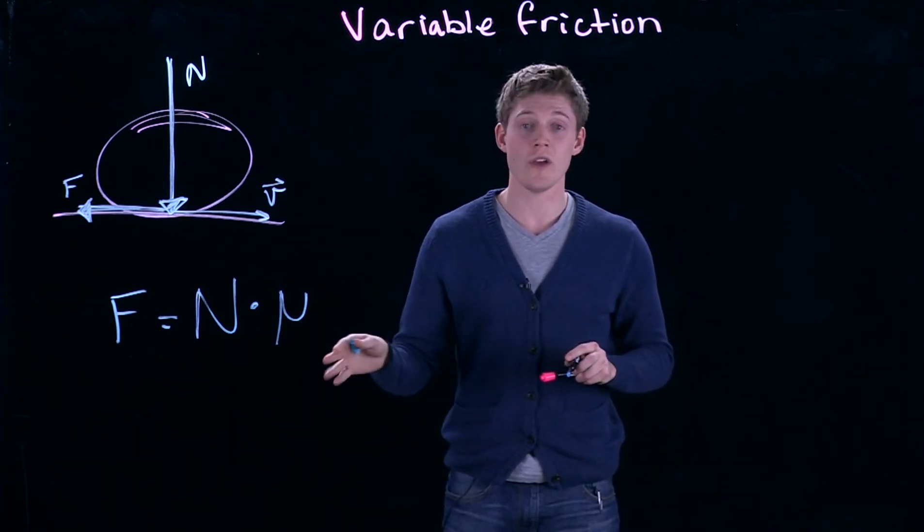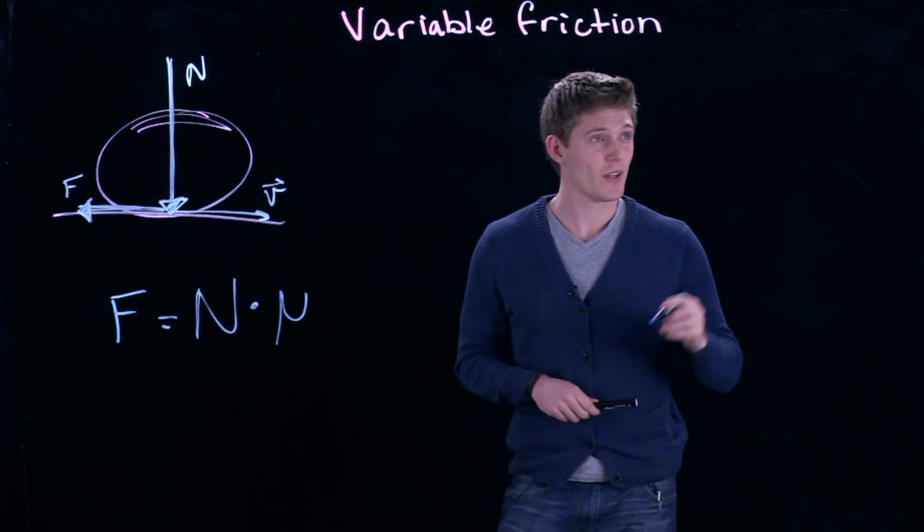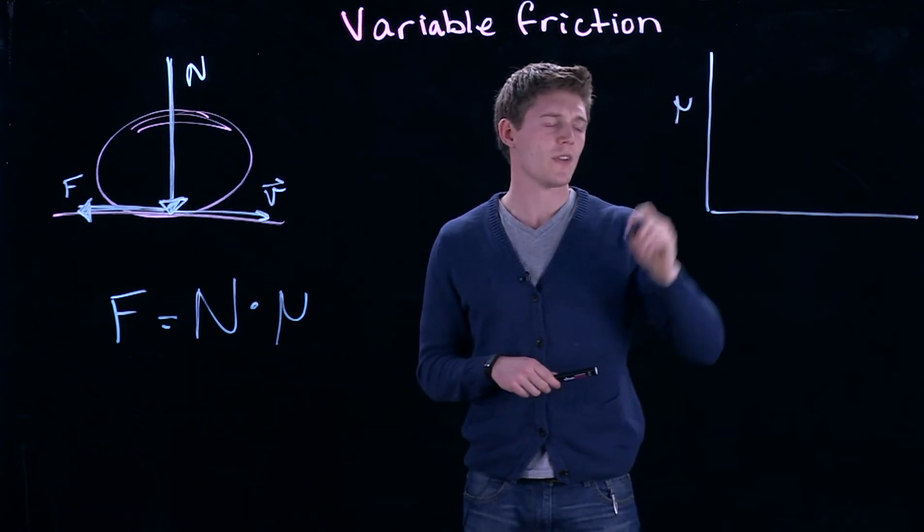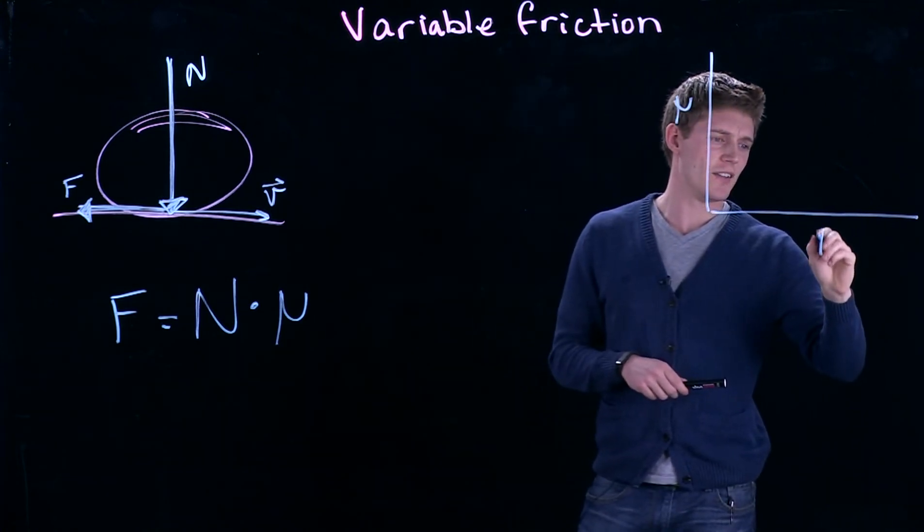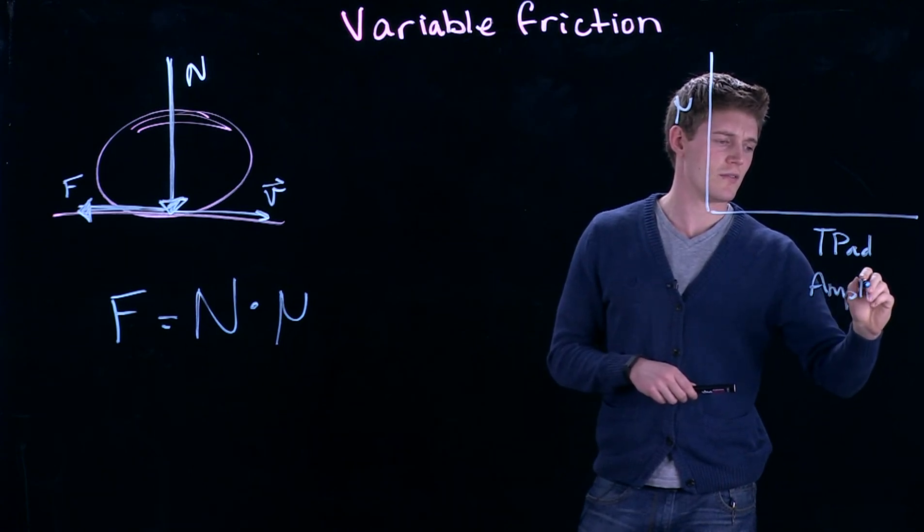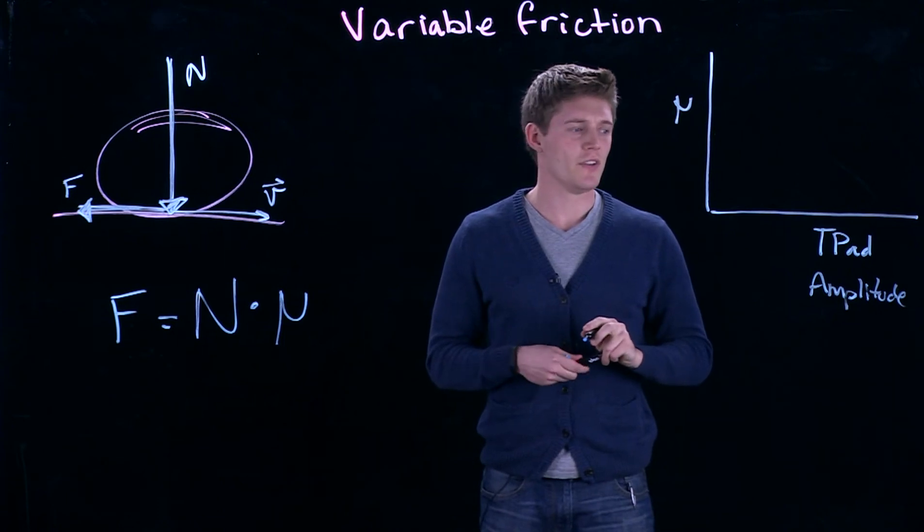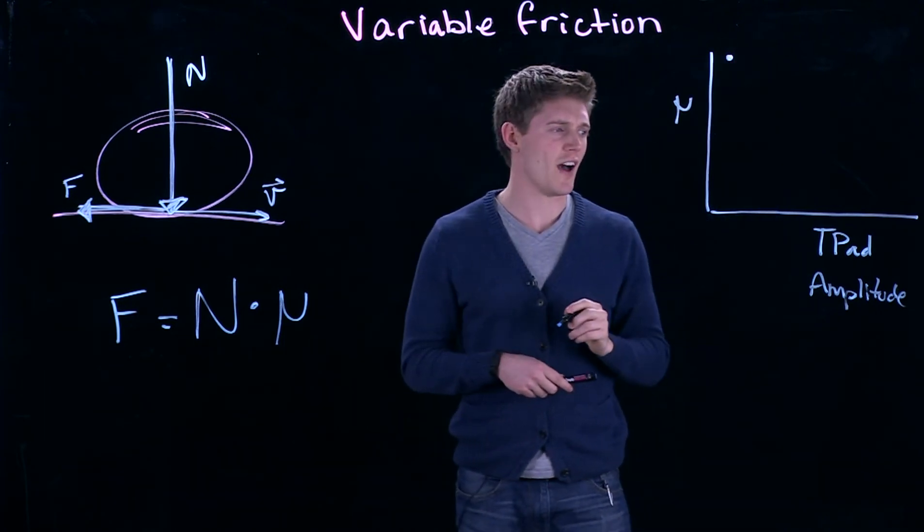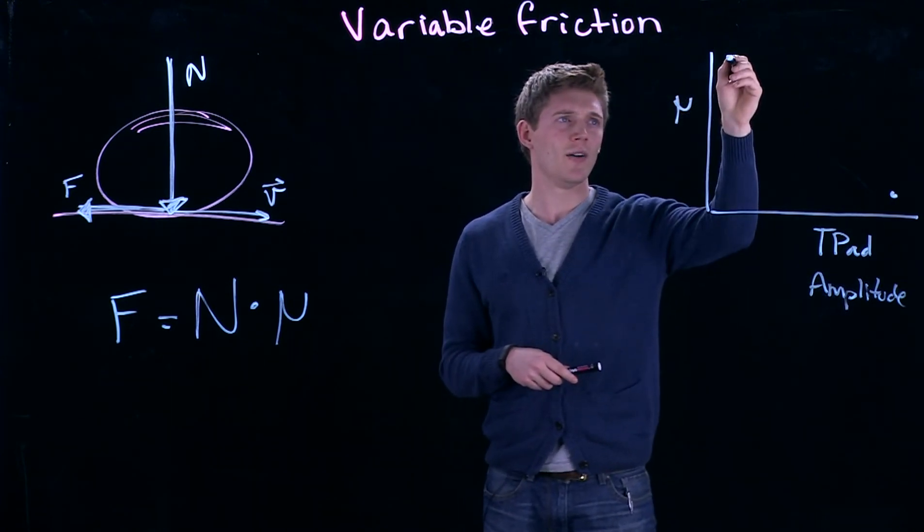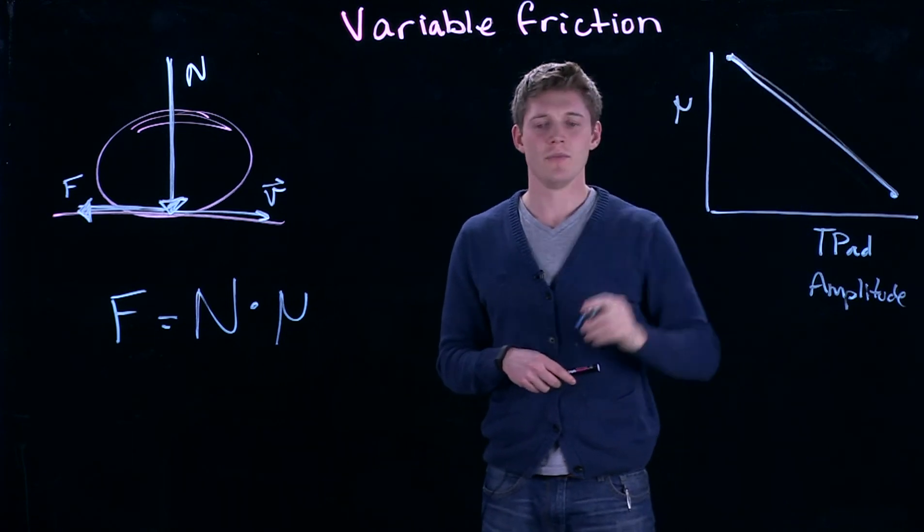and it is what we are able to change with the T-Pad. So if you were to make a plot of μ on the y-axis and T-Pad amplitude on the x-axis, you would see that when the T-Pad is off, friction is high. When the T-Pad is all the way on, friction is low. And it is a mostly linear function in between.